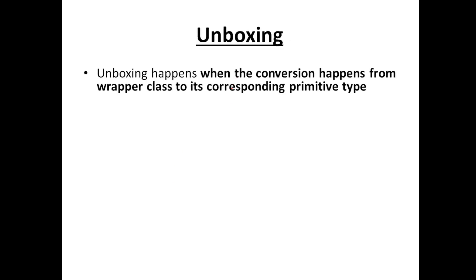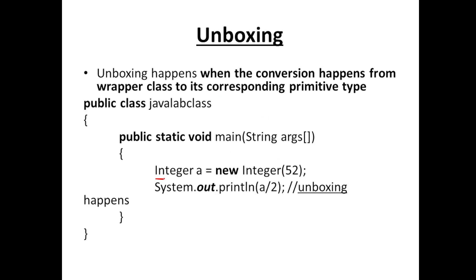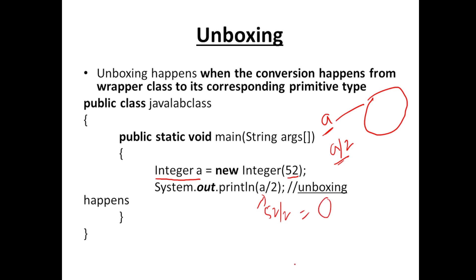Unboxing is the reverse of auto boxing. If I create 'Integer a = new Integer(52)', the object 'a' is a reference variable pointing to a memory location on the heap. When I perform 'a / 2', Java automatically unboxes 'a' from its object to its value 52, so '52 / 2' gives the output. Similarly, 'a + 2' gives 54 because 'a' is automatically unboxed to its primitive value.